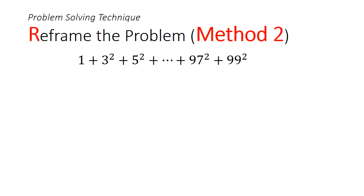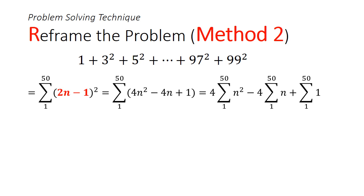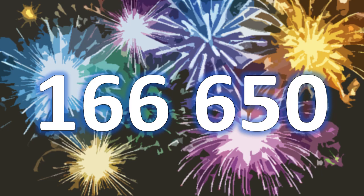An alternative solution is to express odd numbers as 2n minus 1. We will expand the (2n-1)² square. Then we will evaluate each term separately. You will get the same answer. So, did you get the answer?